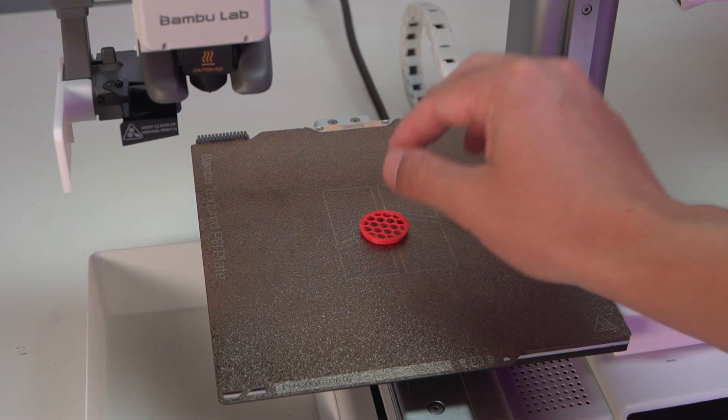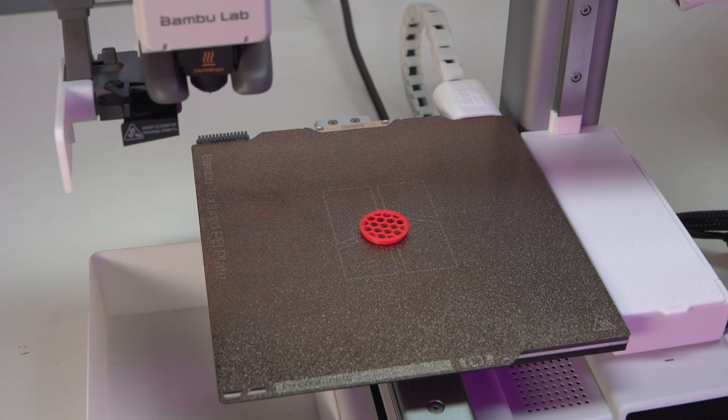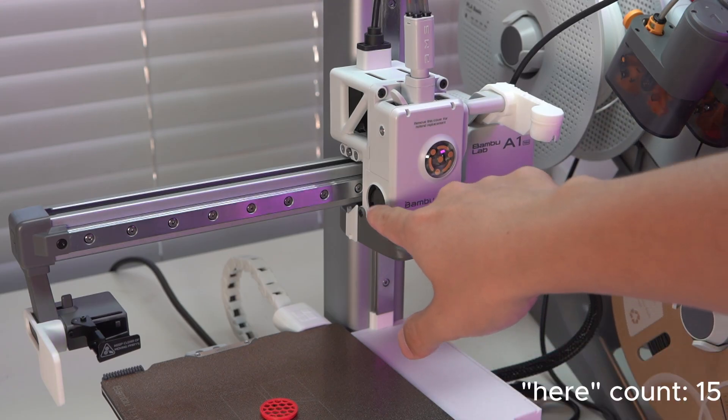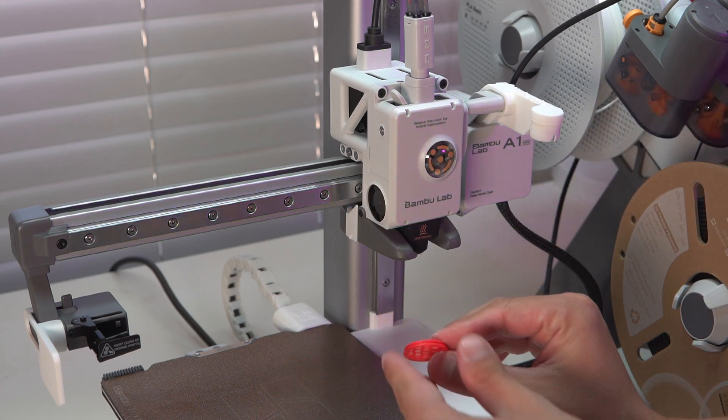This next print is going to take 15 minutes to print and again only one gram of filament. You can use this to add a little bit of pop, a little bit of color to your printer if you'd like, and it also serves a functional purpose. If we take a look at our print head, you may notice that we have a fan right here and absolutely nothing to cover it up.